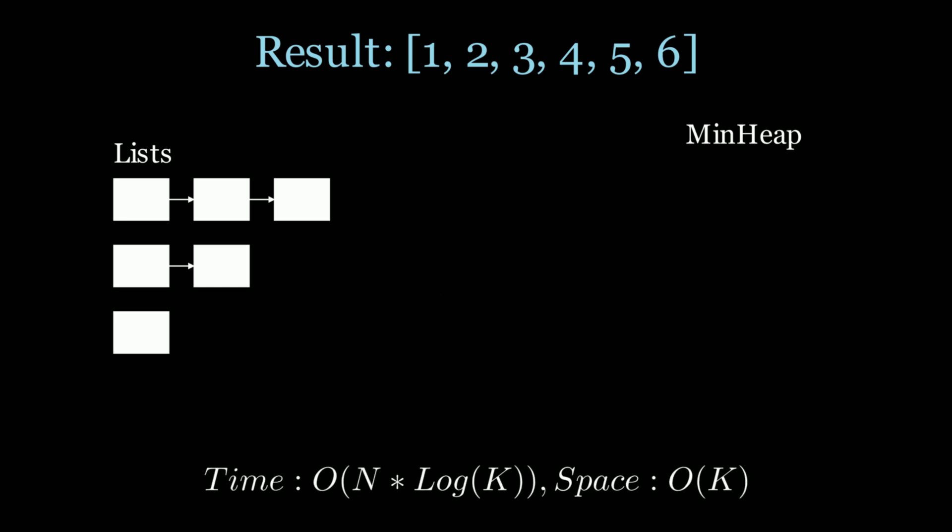Now what's the time complexity of the heap solution? The time complexity is still O of n times log k. The reason is that we have a min heap of size k, where k is how many lists we have. We add one node from all of the lists into the heap. We have O of n elements and for every element we pop one element from the heap, and popping from a heap is a log k operation. So the total time complexity is O of n times log k. For the space complexity, we have O of k because we're storing k elements in the min heap.